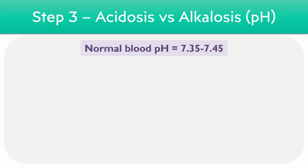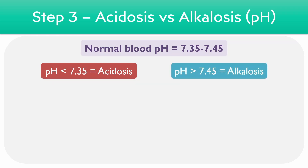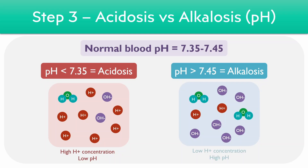The next step of analysis involves looking at the acid-base level. The normal blood pH is usually 7.35 to 7.45. If the pH value drops below 7.35, this is deemed an acidosis, and if it goes above 7.45, it's deemed an alkalosis. An acidosis involves a high concentration of hydrogen ions, whereas an alkalosis involves a reduction in the concentration of hydrogen ions.